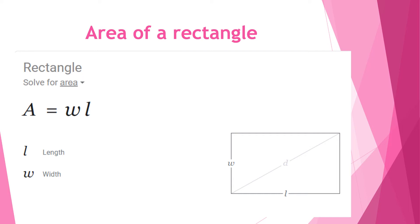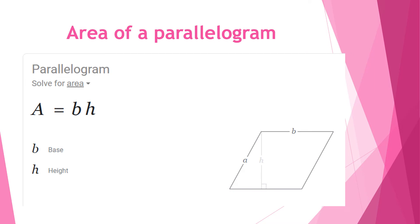To find the area of a rectangle we will use the formula A equals W times L, where W is the width and L is the length. You just multiply the length and the width to come up with the area of a rectangle.